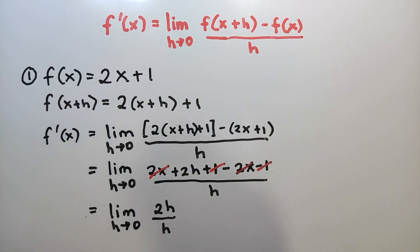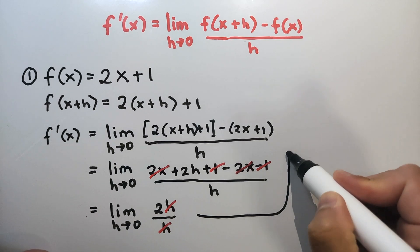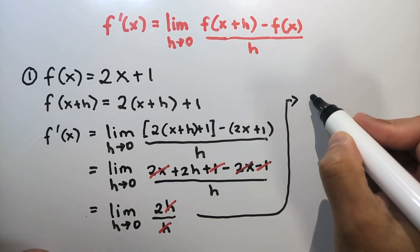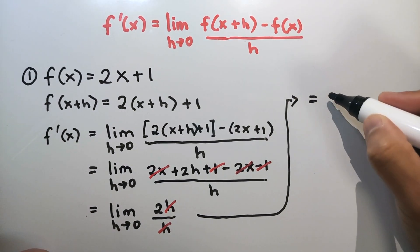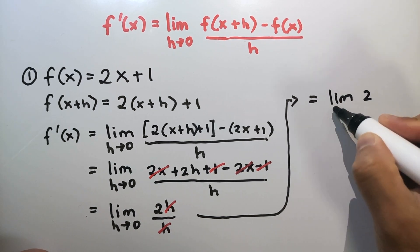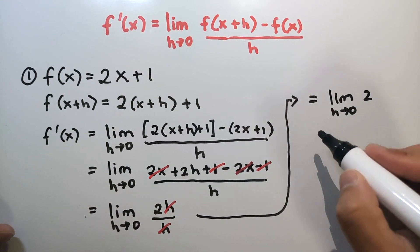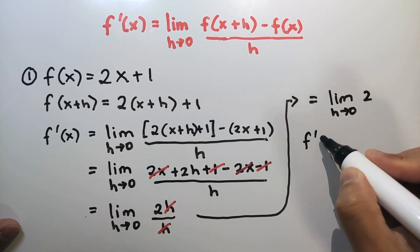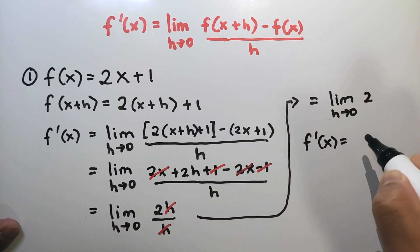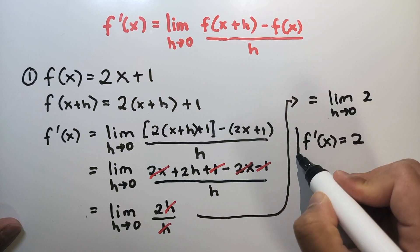Then simplify it further — cancel h. So we have the limit of 2 as h approaches 0. The limit of a constant is equal to the constant. Thus the derivative of the function is equal to 2. This is our final answer.